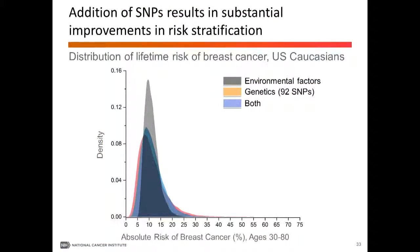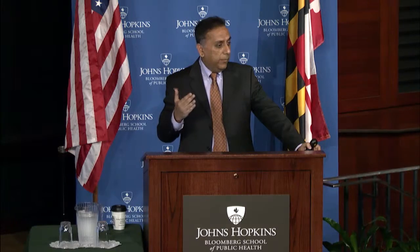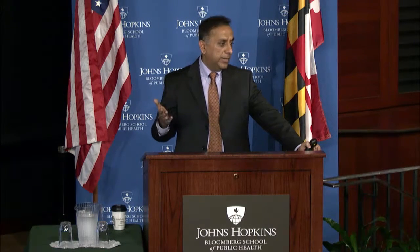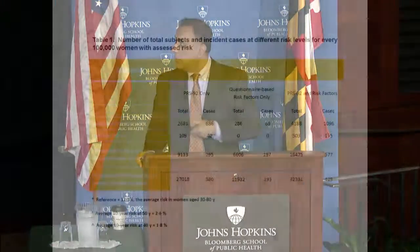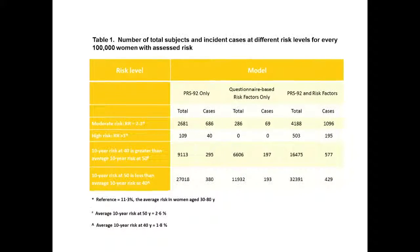Let's get more concrete with a particular application. Can we use this kind of model to decide when a woman might be recommended for screening, as opposed to following the current guideline which is simply based on age? In the U.S., the current guideline for starting mammographic screening is age 50, and for many cancers, age is used as the threshold for screening. But why do we use age? Because age is the strongest risk factor for many chronic diseases. But age is not the only risk factor, and the question is: if we use a risk-based approach instead of age, how much will things change?